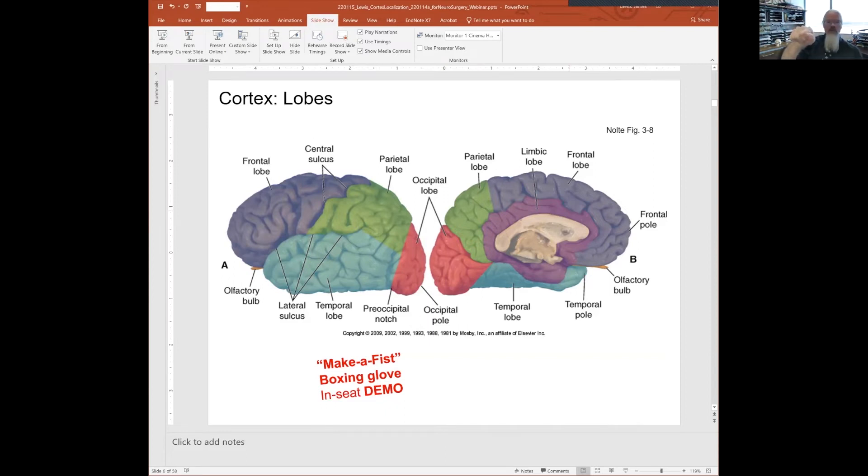The brain is basically like a boxing glove. Your thumb is your temporal lobe, your knuckles are your frontal lobe, the back of your hand is your parietal lobe, and your wrist—where your arm connects—is where your occipital lobe is located.